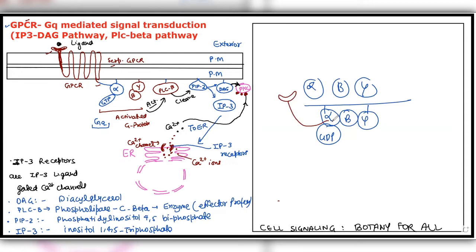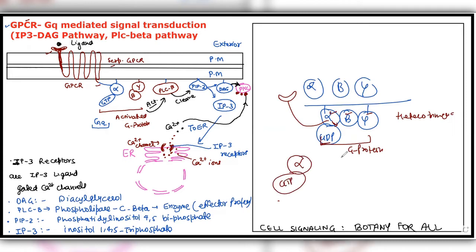This G protein, according to its alpha domain, is a trimeric protein — heterotrimeric — because alpha, beta, and gamma are three separate units, so it is a heterotrimeric protein. In the inactive state it is bound to GDP, and after becoming active, the alpha subunit binds to GTP and beta-gamma separate. So both domains of the G protein are considered activated — G protein alpha-GTP as well as beta-gamma.